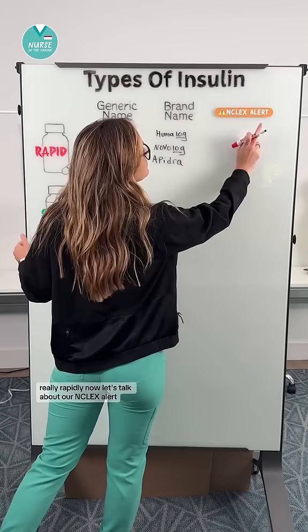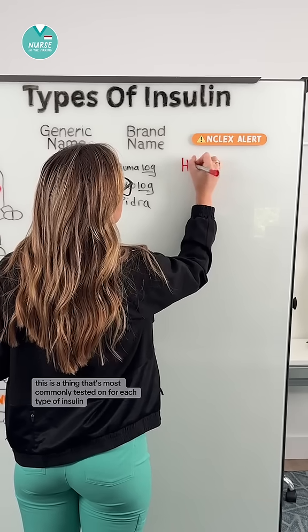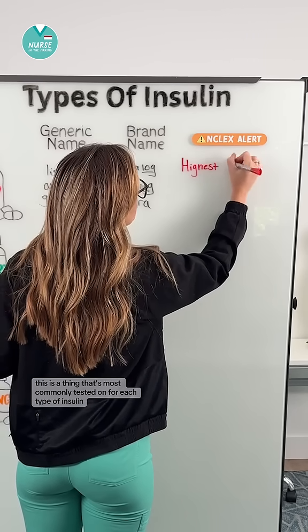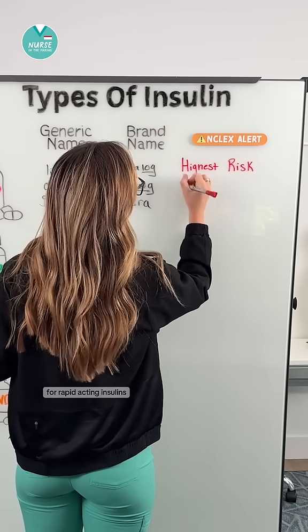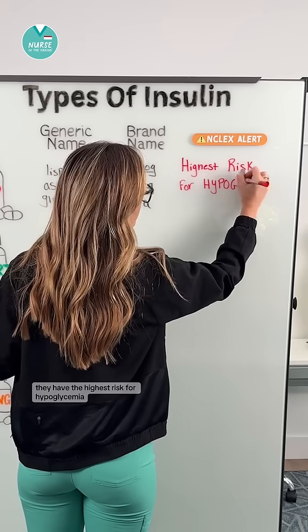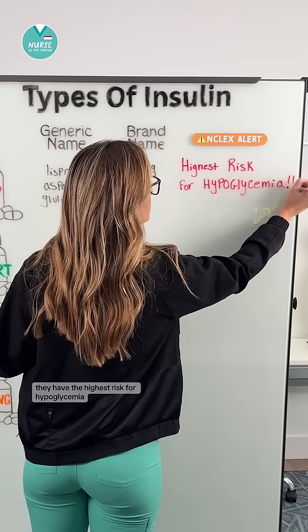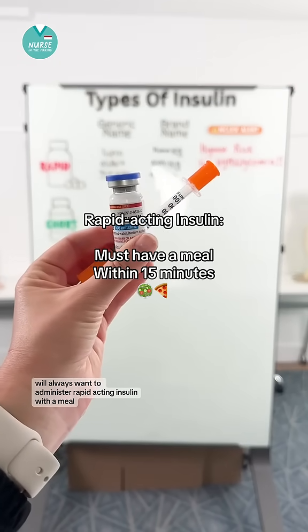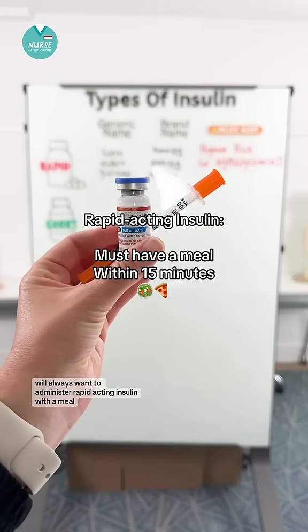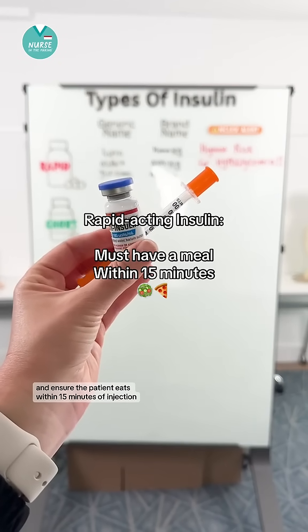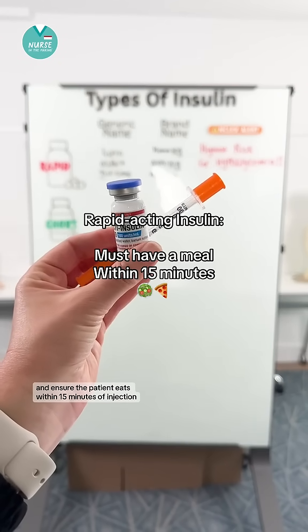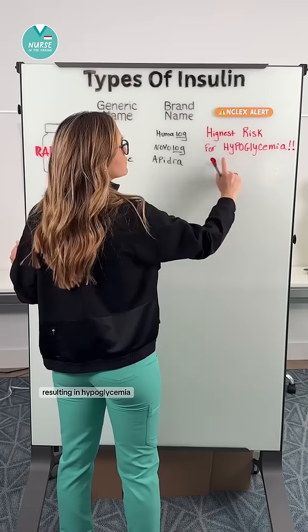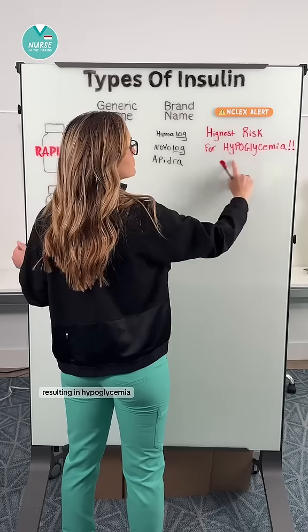Now let's talk about our NCLEX alert. This is the thing that's most commonly tested on for each type of insulin. For rapid-acting insulins, they have the highest risk for hypoglycemia. You always want to administer rapid-acting insulin with a meal and ensure the patient eats within 15 minutes of injection to prevent a sudden drop in blood sugar resulting in hypoglycemia.